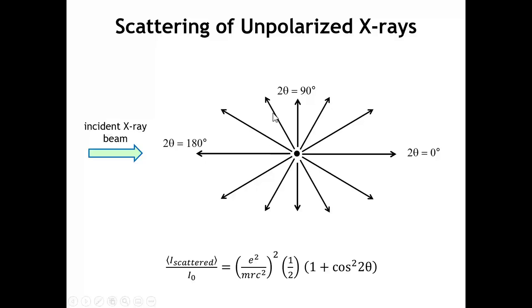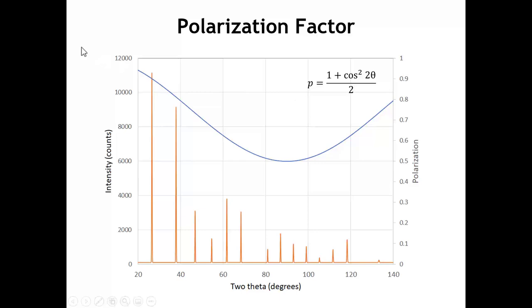There is maximum scattering in the forward and back-scattering directions, and only half that scattering at two-theta equals 90 degrees. If we plot that term as a function of two-theta, it reaches a minimum at 90 degrees. One thing to remember is that for many experiments we don't have a completely unpolarized beam — for example, at a synchrotron source the light is not completely unpolarized. If the incident beam bounces off a monochromator to select a specific wavelength, that also changes the polarization. Under certain circumstances, we have to use a different polarization correction.